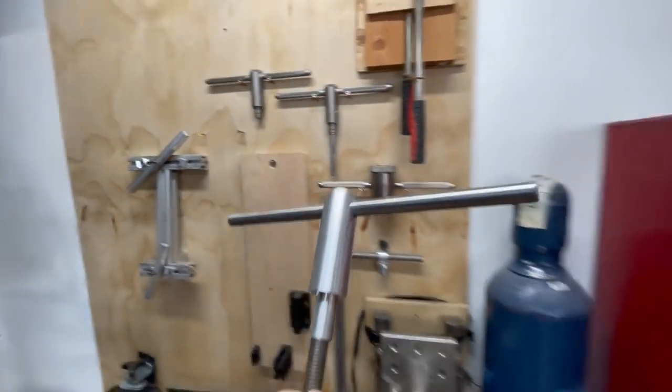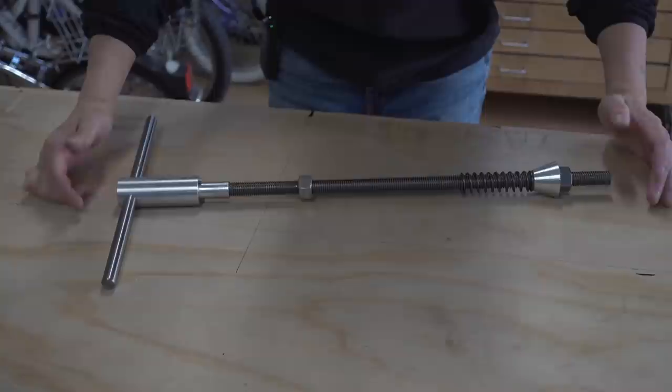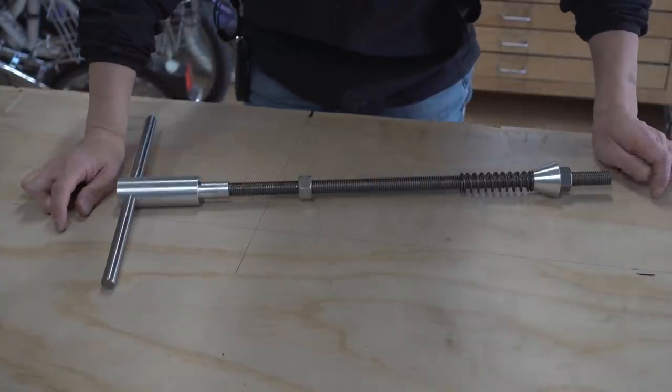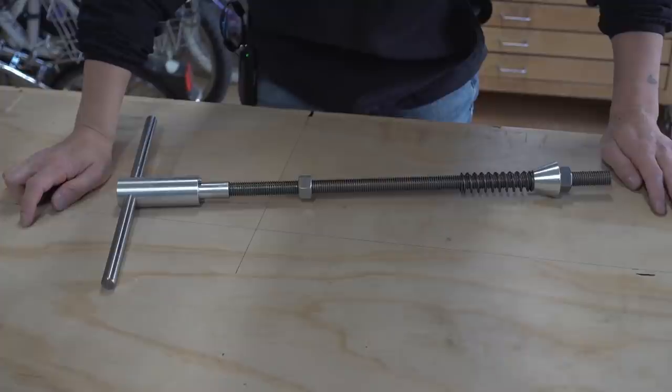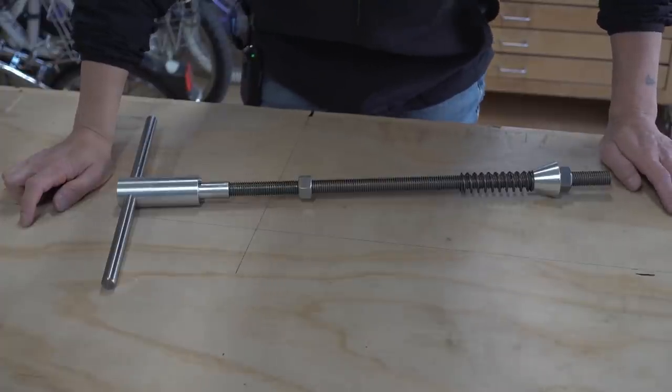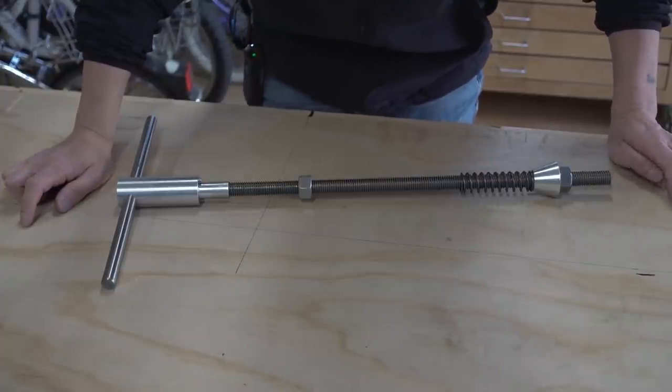This here is a head tube reamer and facer handle. If you build more than one bike a year, chances are you own this. But if you don't, you can bring it to a bike shop and they will do the reaming and facing for you.